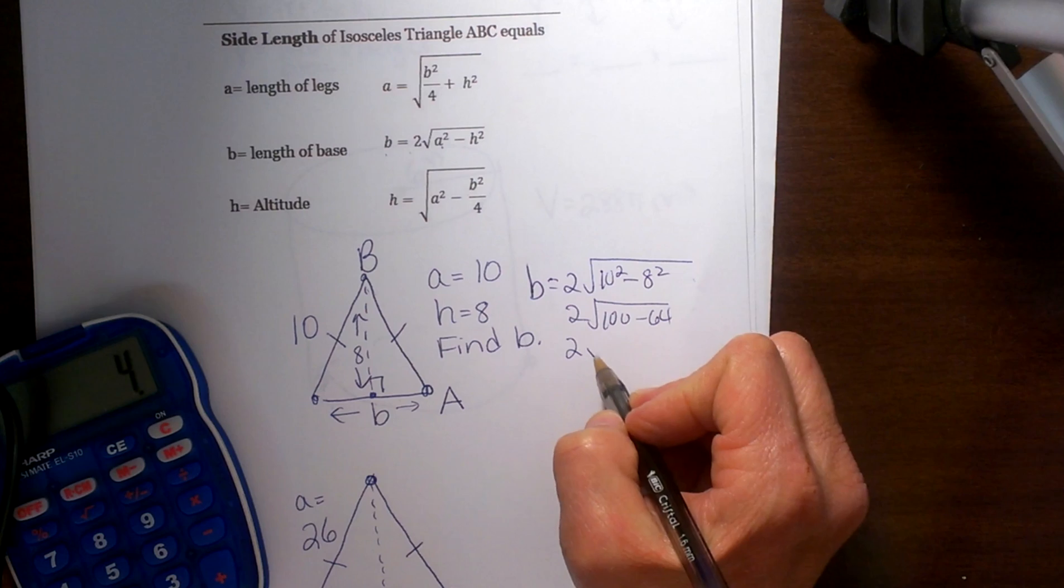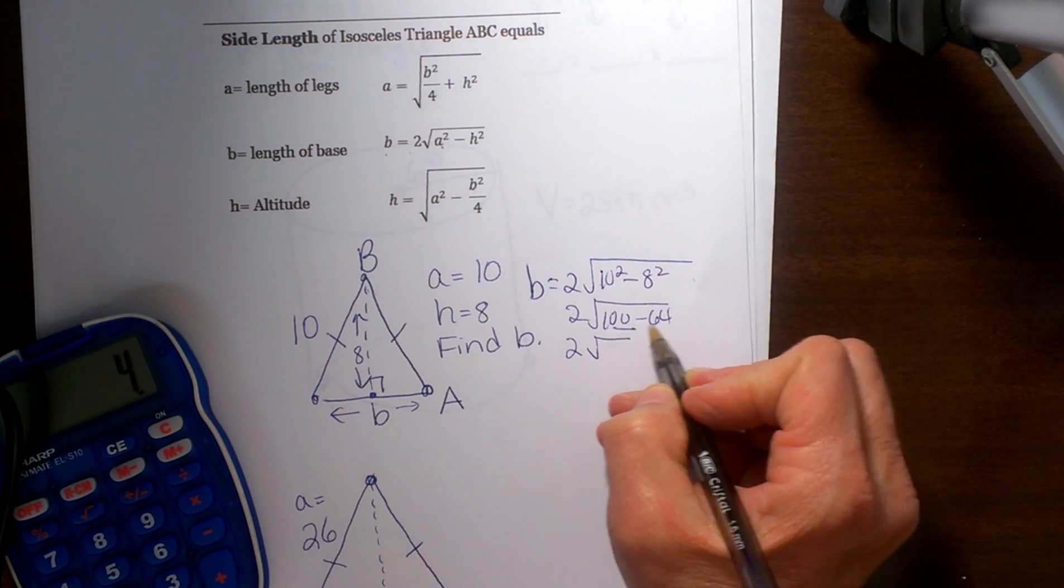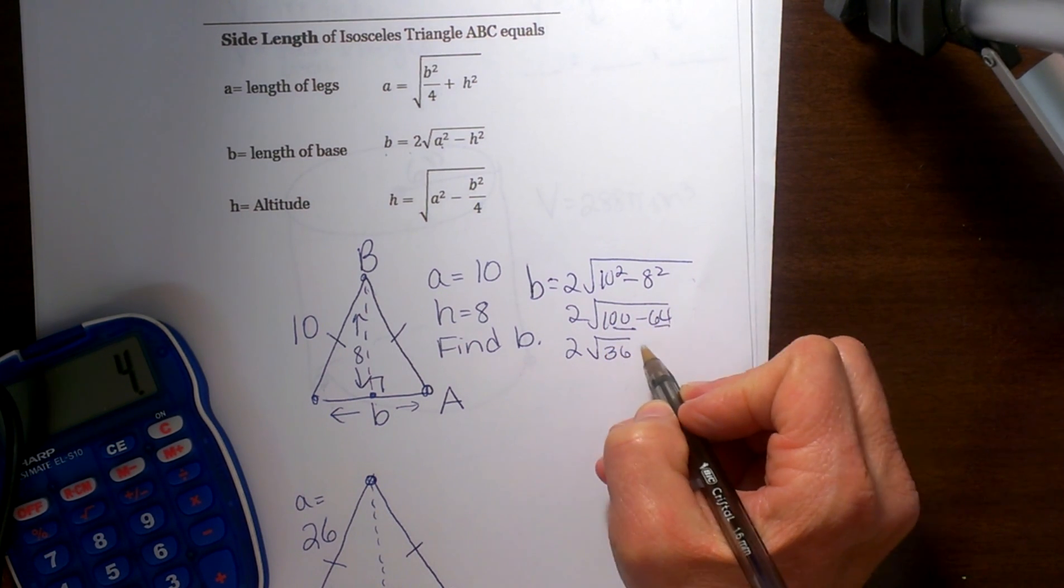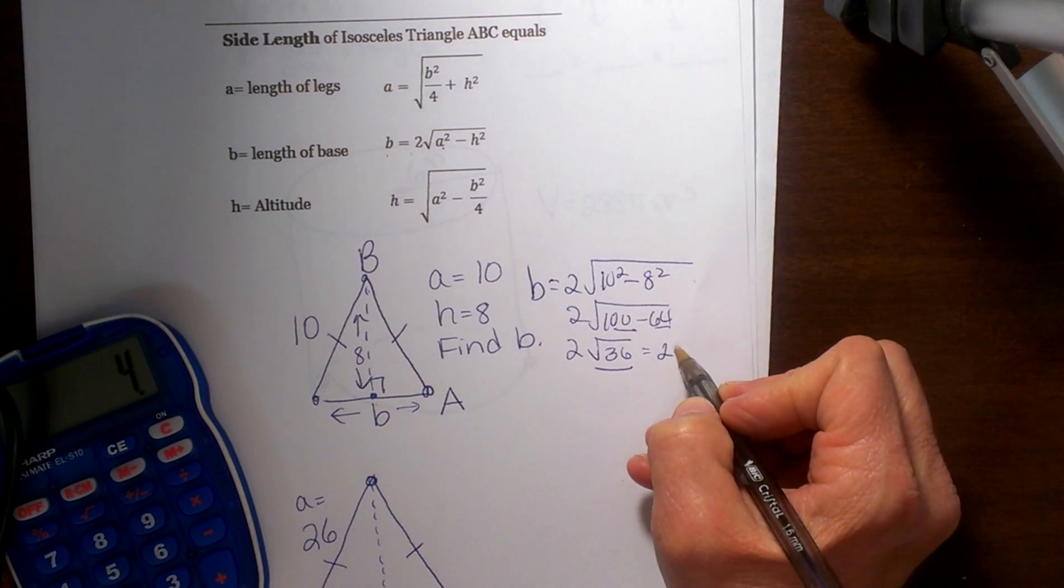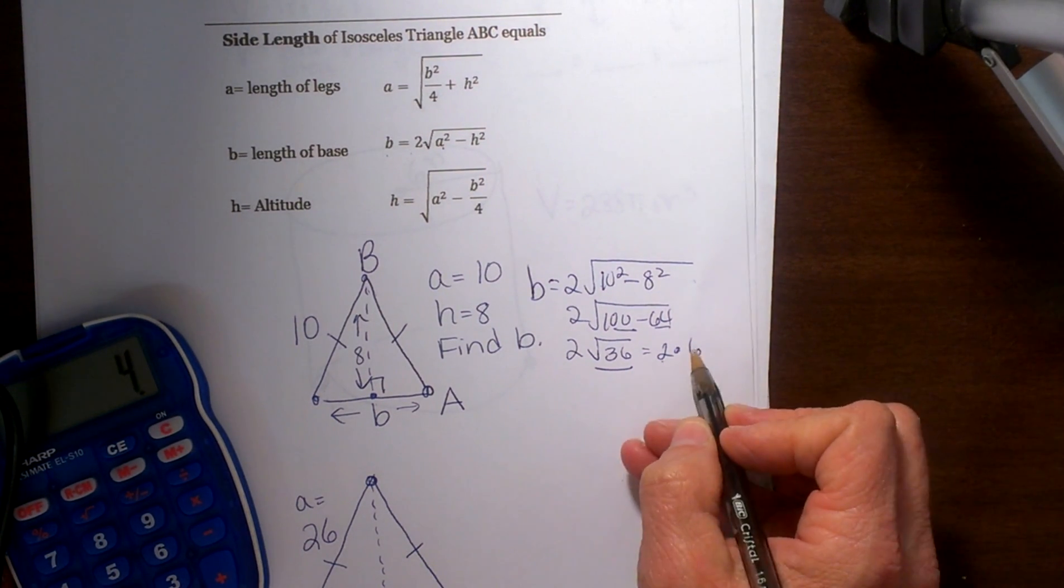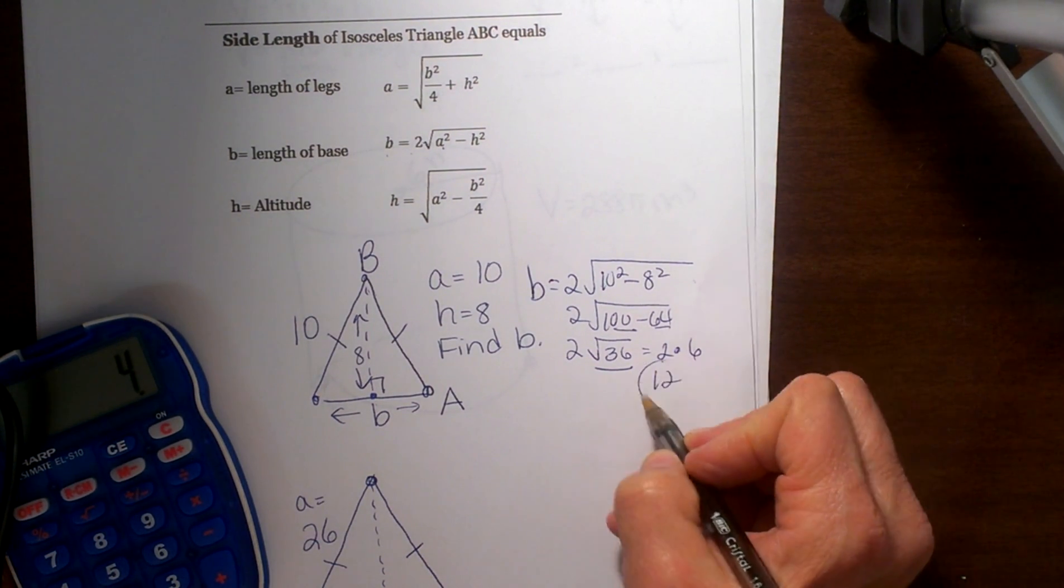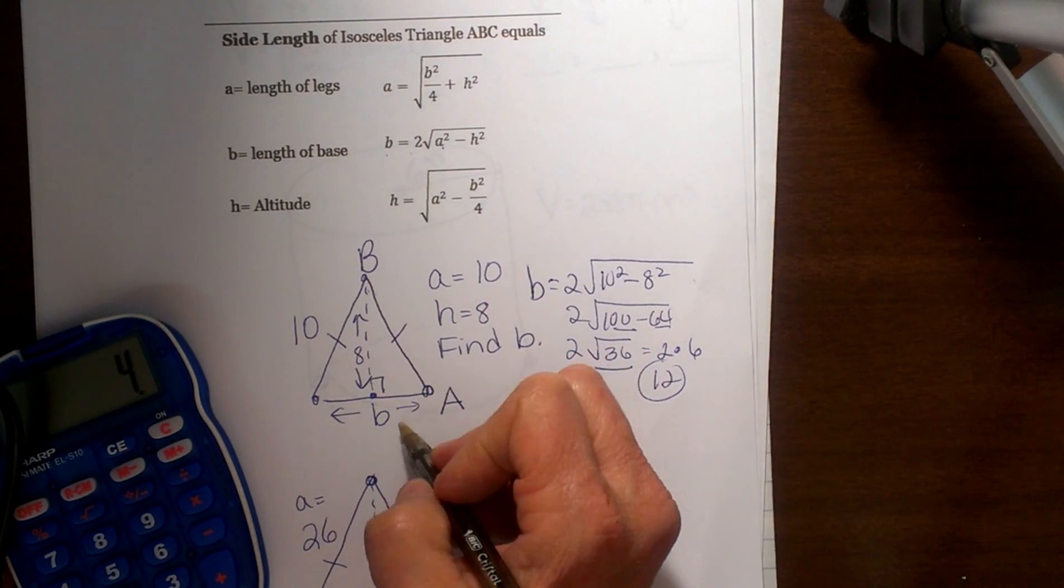And I bring that 2 down, so 2 times the square root of, well, 100 minus 64 is 36, so 2 times the square root of 36. Well, the square root of 36 is 6, so 2 times 6 is 12. So that is how long my base is down here.